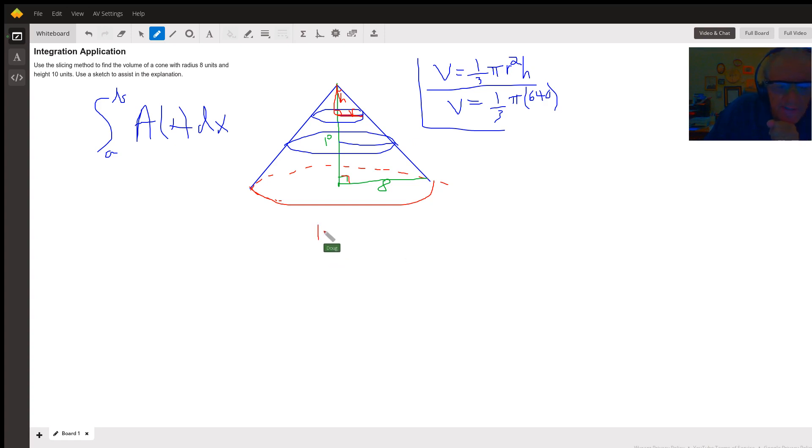So it must be true that 10 is to 8 as h is to r. And I'm going to use that to solve for r in terms of h. I can see that if I cross multiply and then divide by 10, I get 8h over 10 or 4 fifths h.